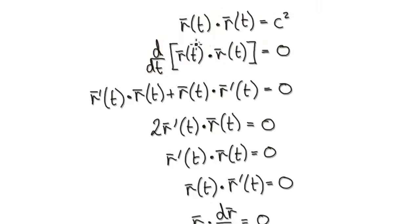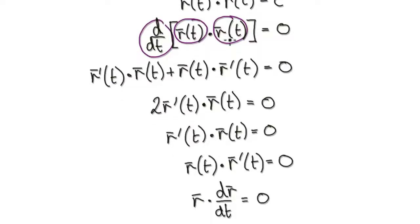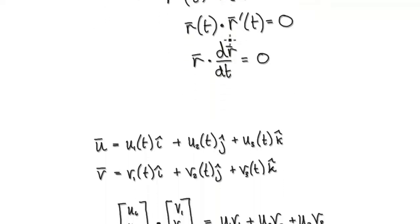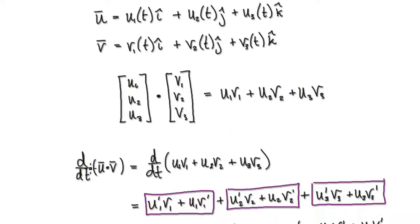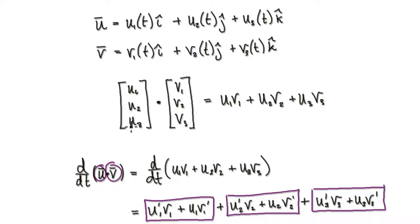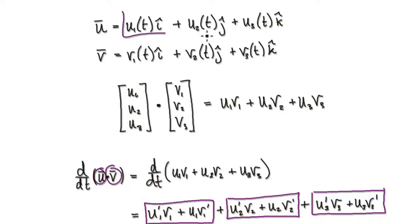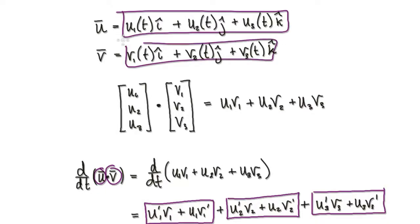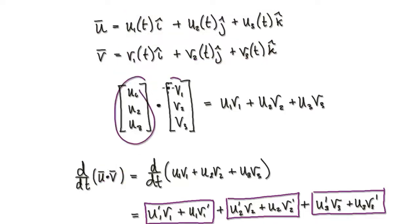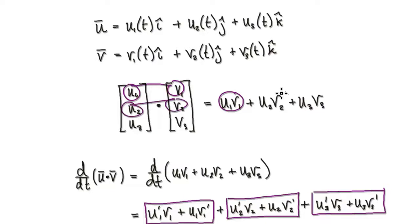So let's try to understand what it means to take the derivative of a dot product. Suppose you have two vectors. We're trying to understand what it means to differentiate a dot product of two vectors. You can visualise it in this form here — one vector dotted with another vector — which breaks down as this component times this component, plus this component times this component.